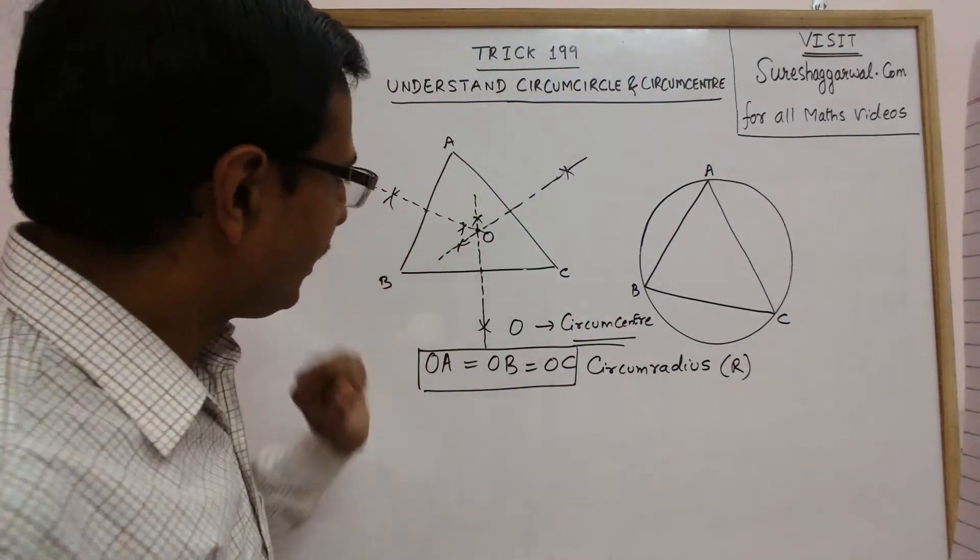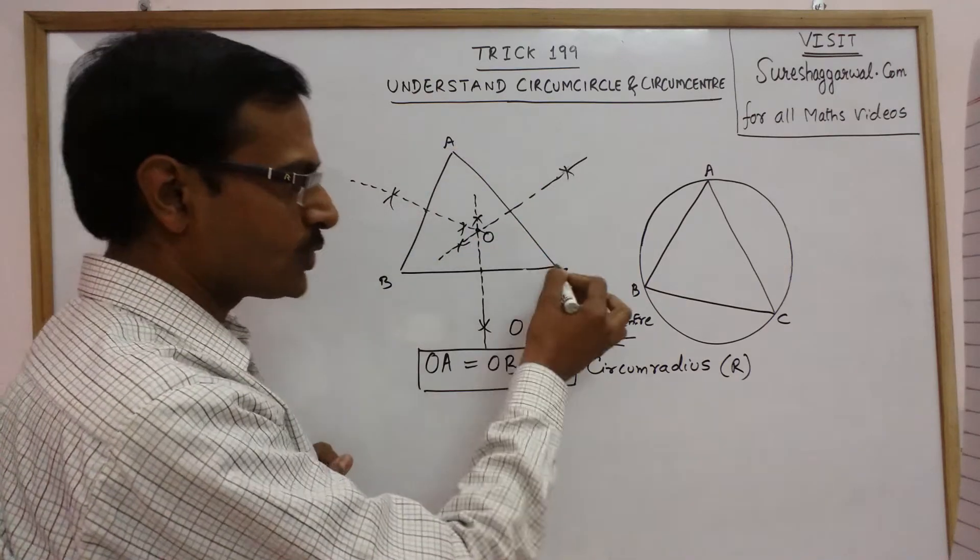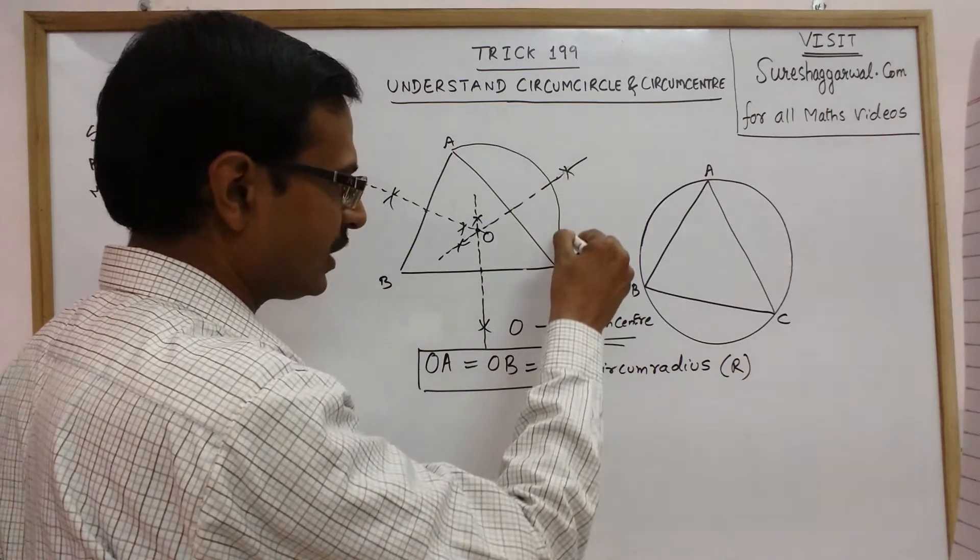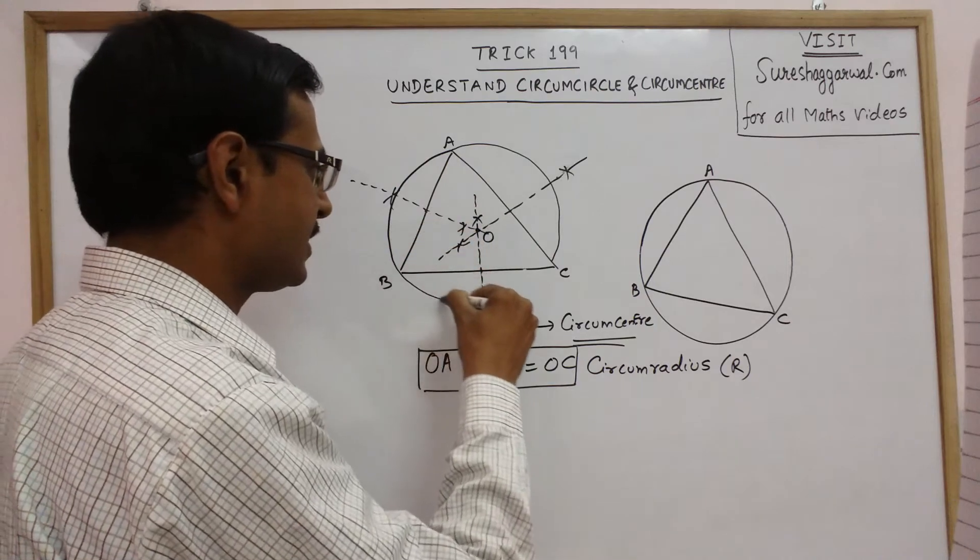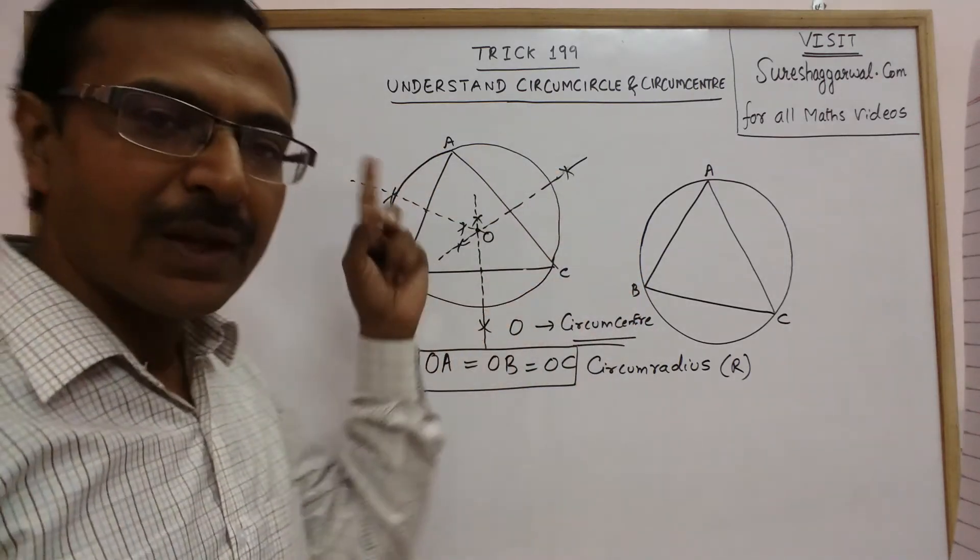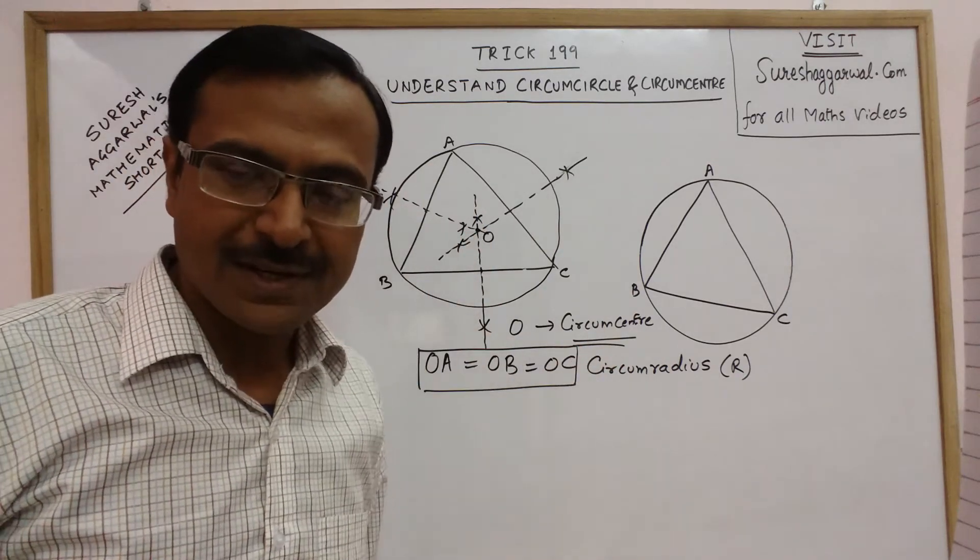If you take O as the center and OA, OB or OC as the radius, you can draw a circle which passes through the three points A, B and C. This circle will automatically pass through A, B and C and O will be the center of this circle.